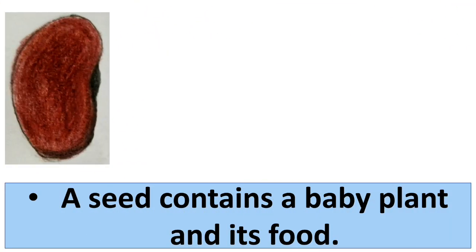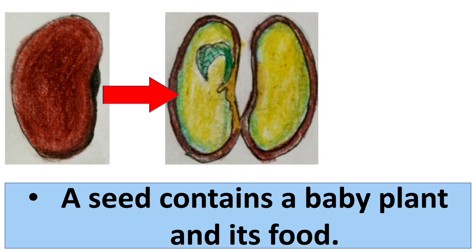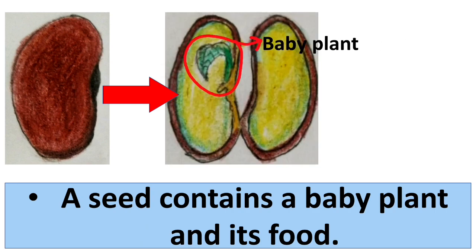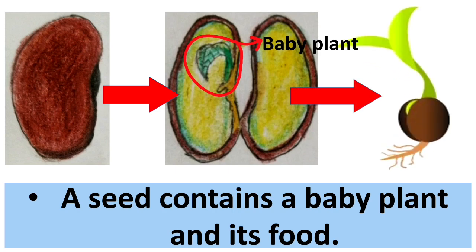A seed contains a baby plant. As you can see in this picture, this is a baby plant, and this baby plant grows into a new and healthy plant.